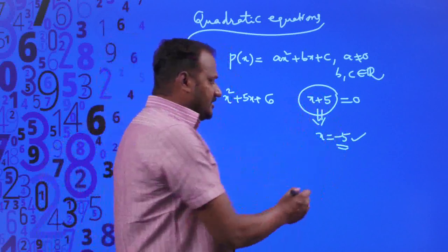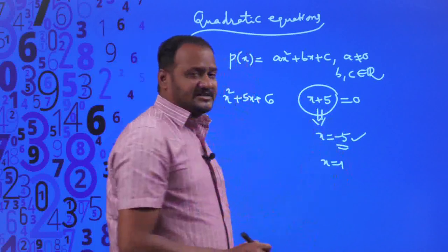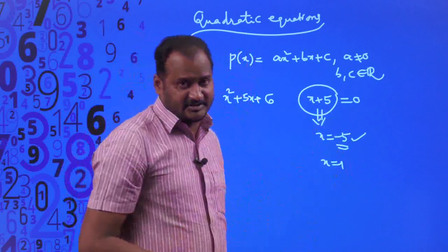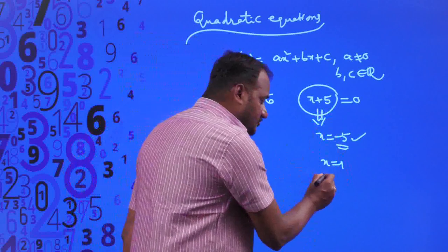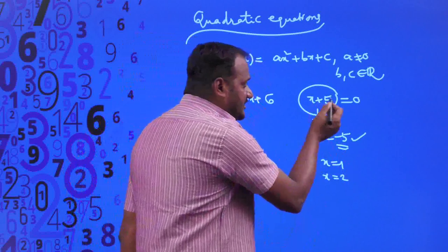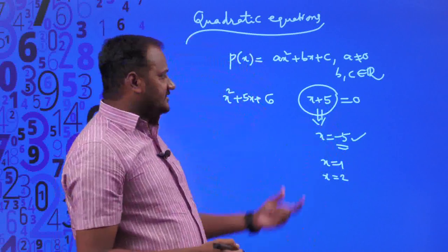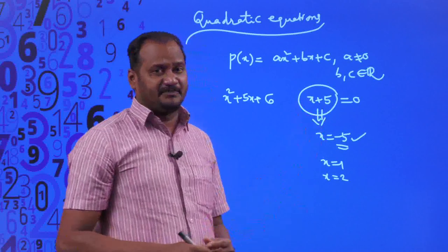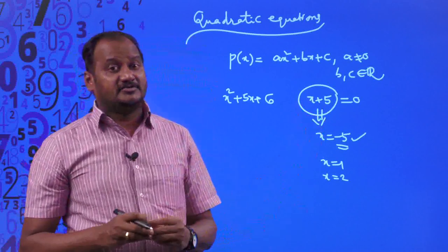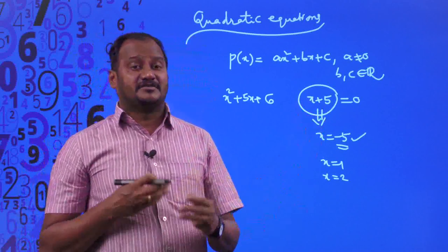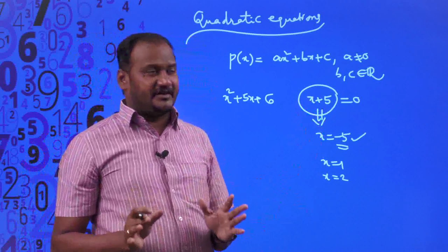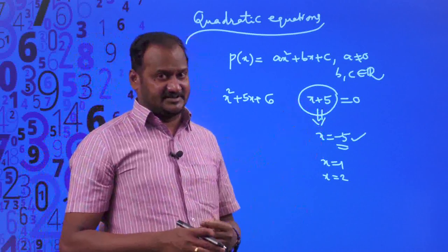For example, if you put x = 1, then x + 5 will become 1 + 5 = 6. If you put x = 2, then 2 + 5 = 7. So this polynomial expression will give values according to the values of the variable. There is no fixed value for x + 5 as it is an expression.